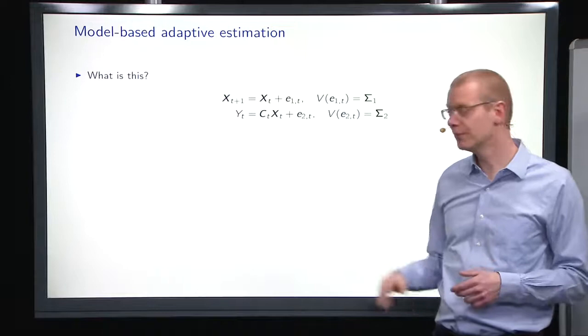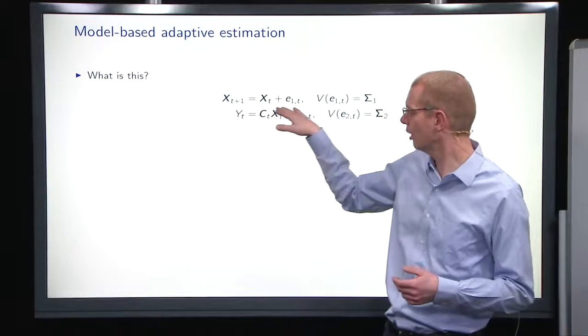Then we have some design matrix here, that's ct. And then we have some parameters here, xt.